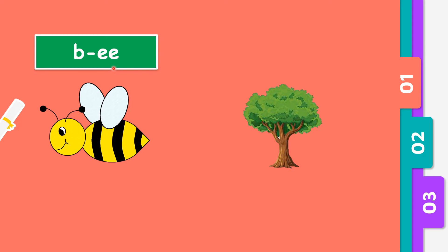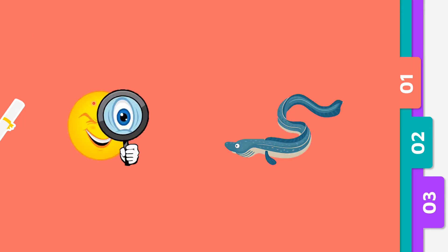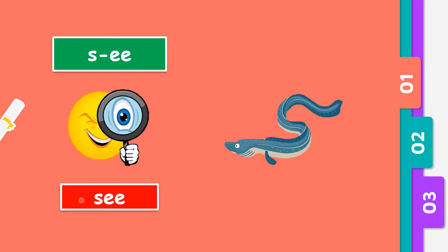B, EE, bee. Next one. T, REE, tree, tree. Next we have S, EE, see.